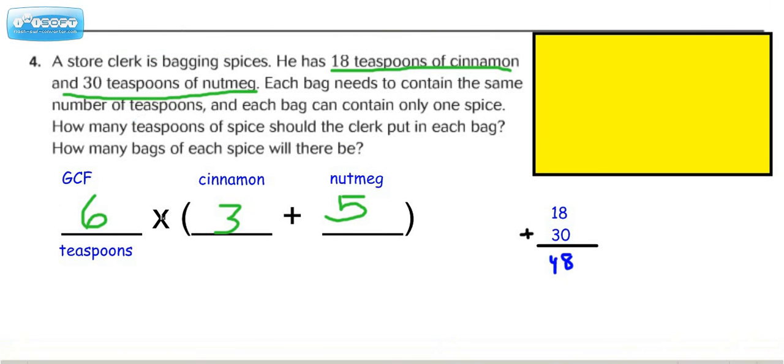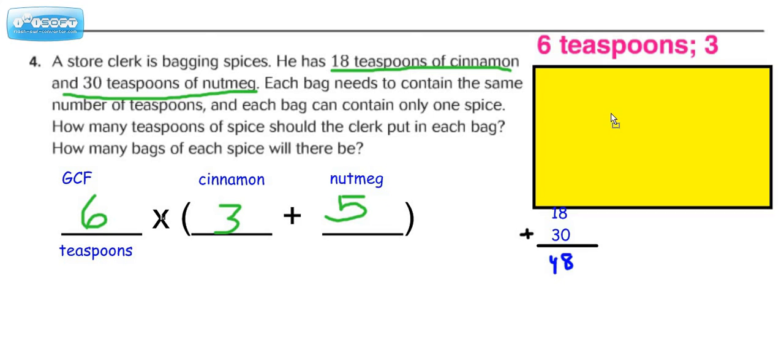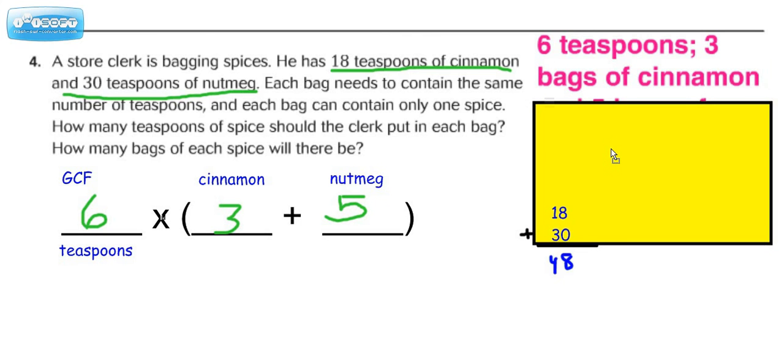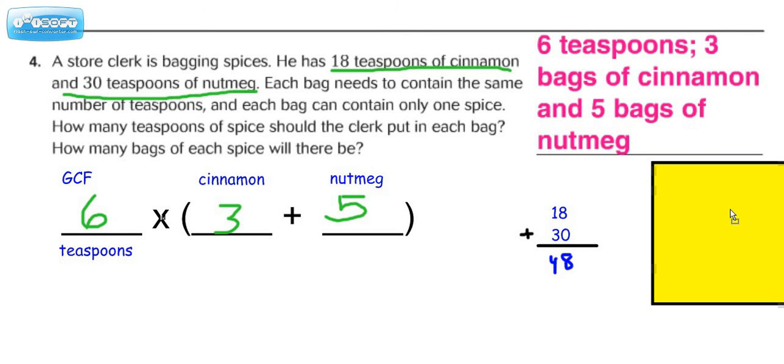Alright, so basically what we're looking at here is you need 6 teaspoons, 3 bags of cinnamon, and 5 bags of nutmeg.